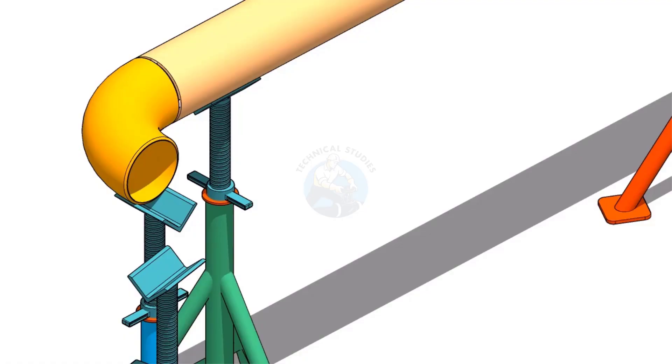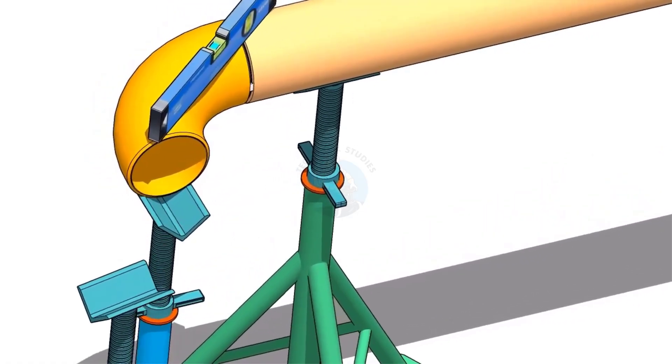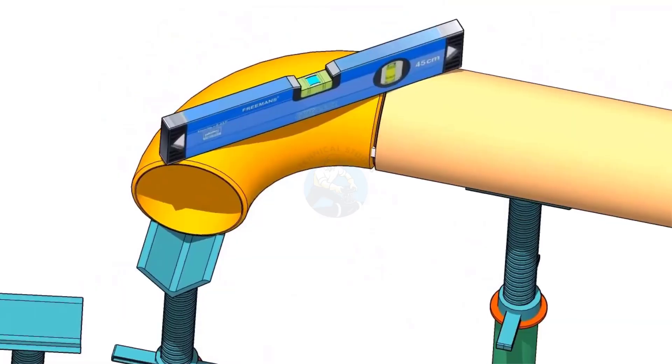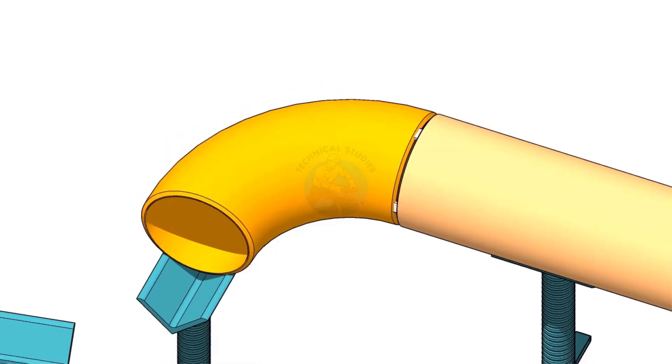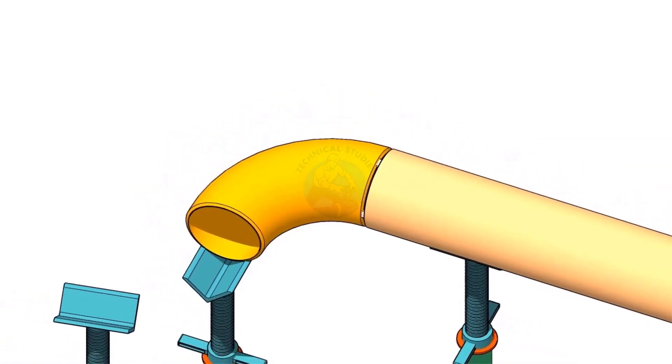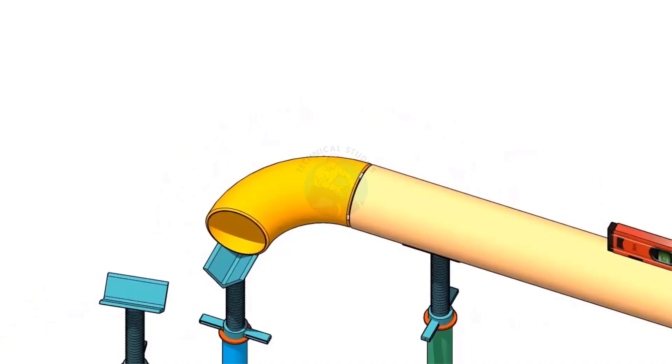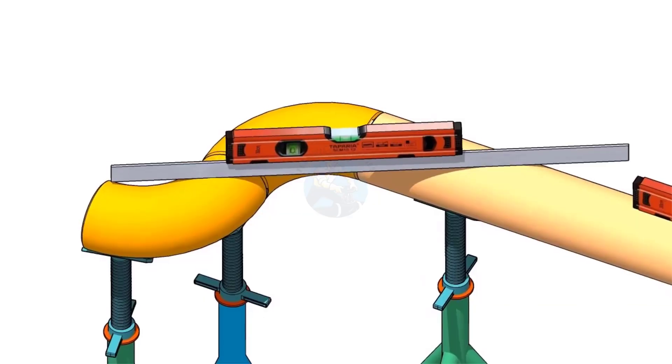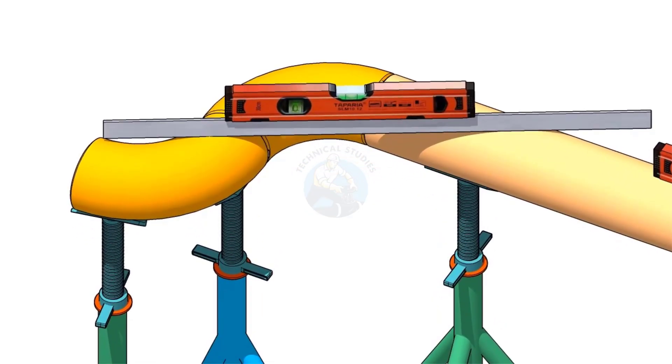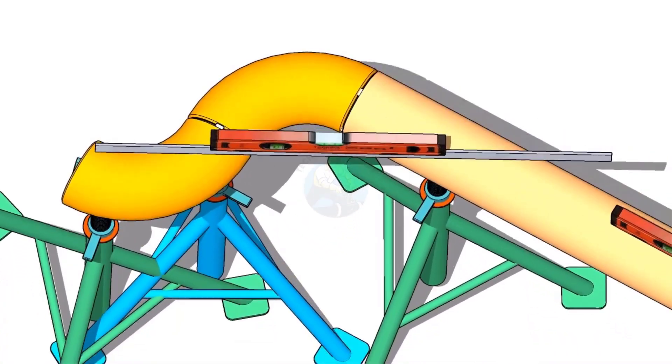Put the elbow on the stand and check the level. Use a straight edge and a spirit level. Check the face level of the elbow.